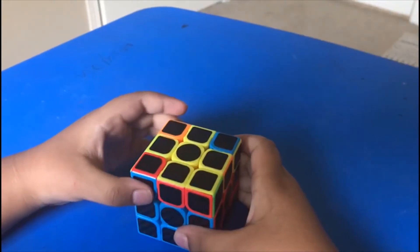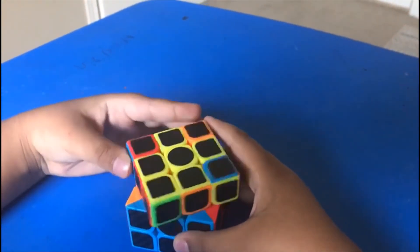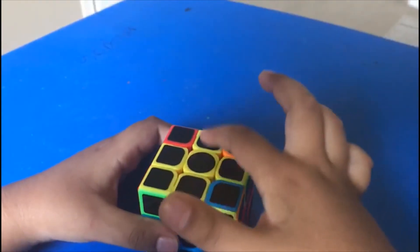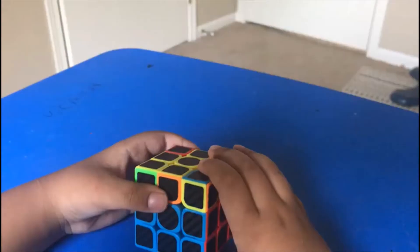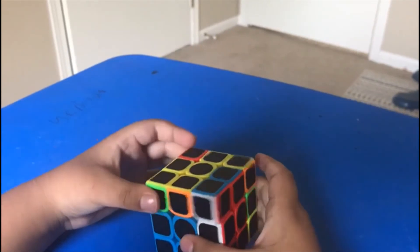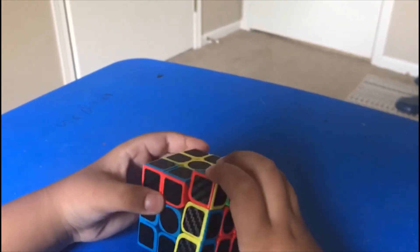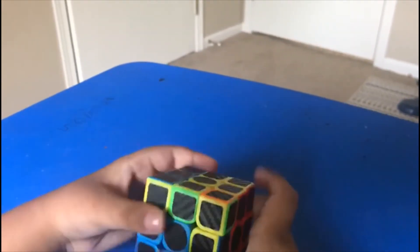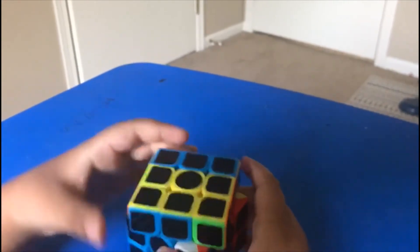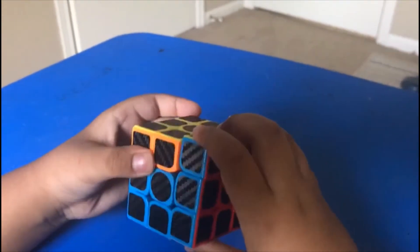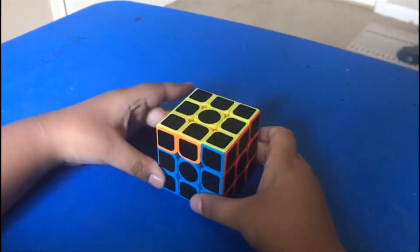Turn the fish head to the left side. Apply R, U, R prime, U, R, U2, R prime. We solved the yellow.